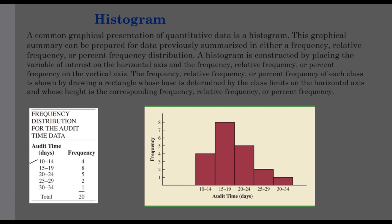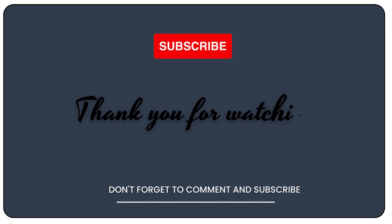For quantitative data, the graphical representation is a histogram. A histogram is constructed by placing the variable of interest on the horizontal axis and the frequency — or relative frequency or percent frequency — on the vertical axis. Rectangles are drawn for each class interval. For example, we use a rectangle for 10 to 14, another for 15 to 19, and so on. This is another way to graphically represent quantitative data.